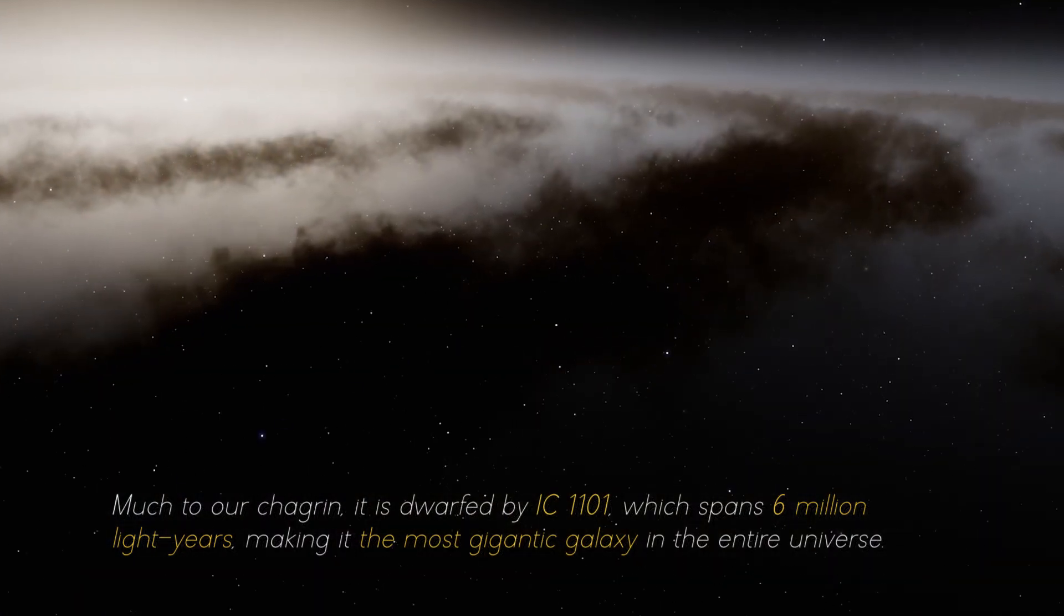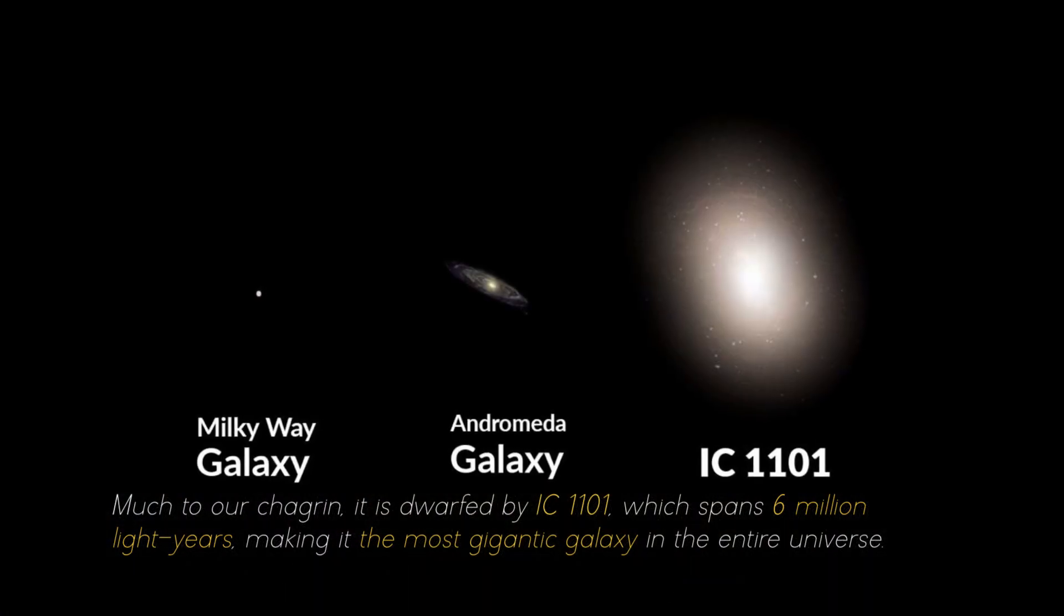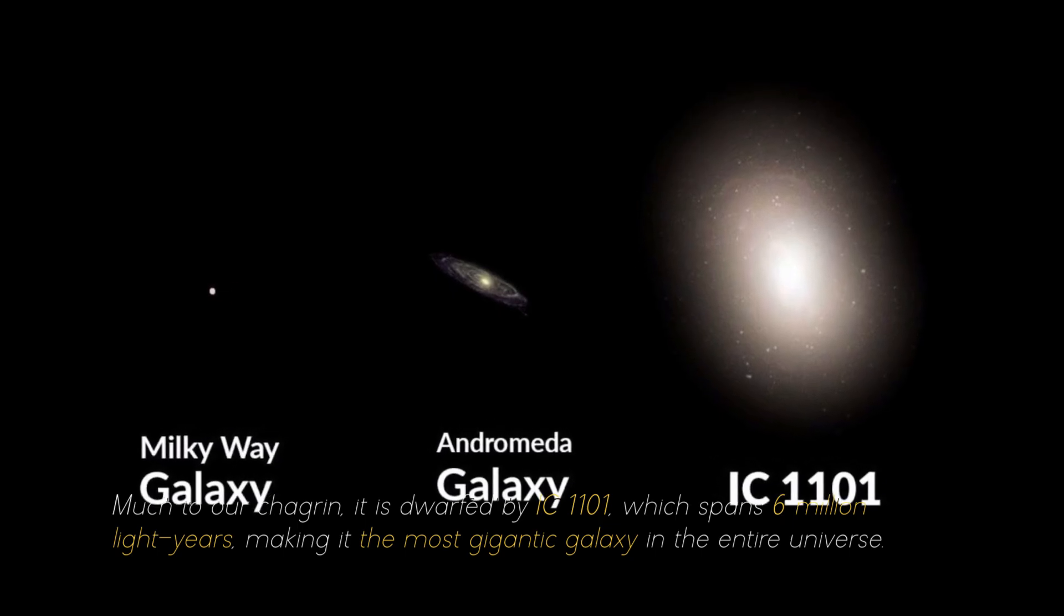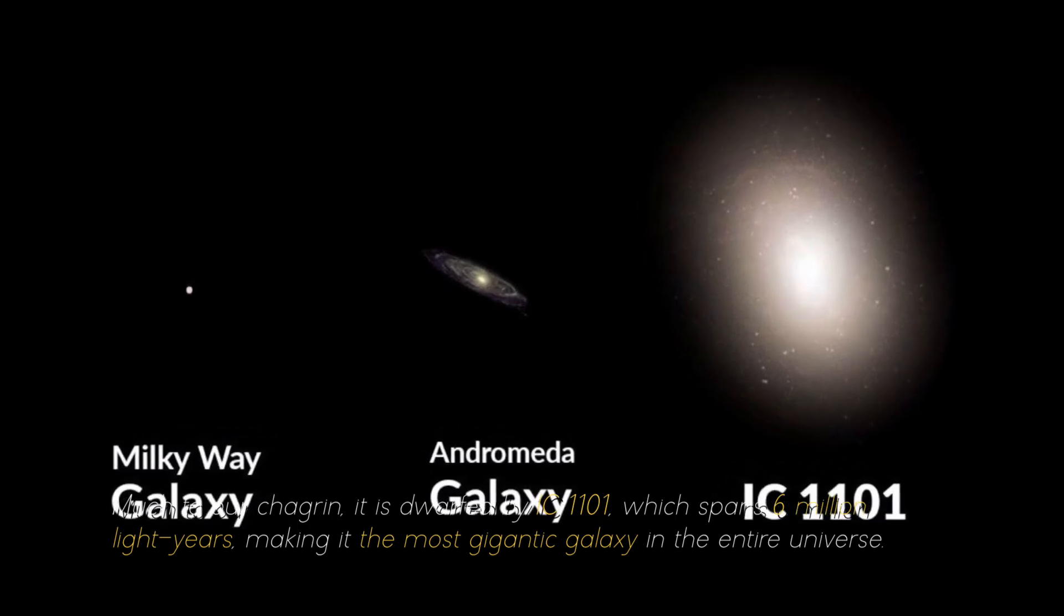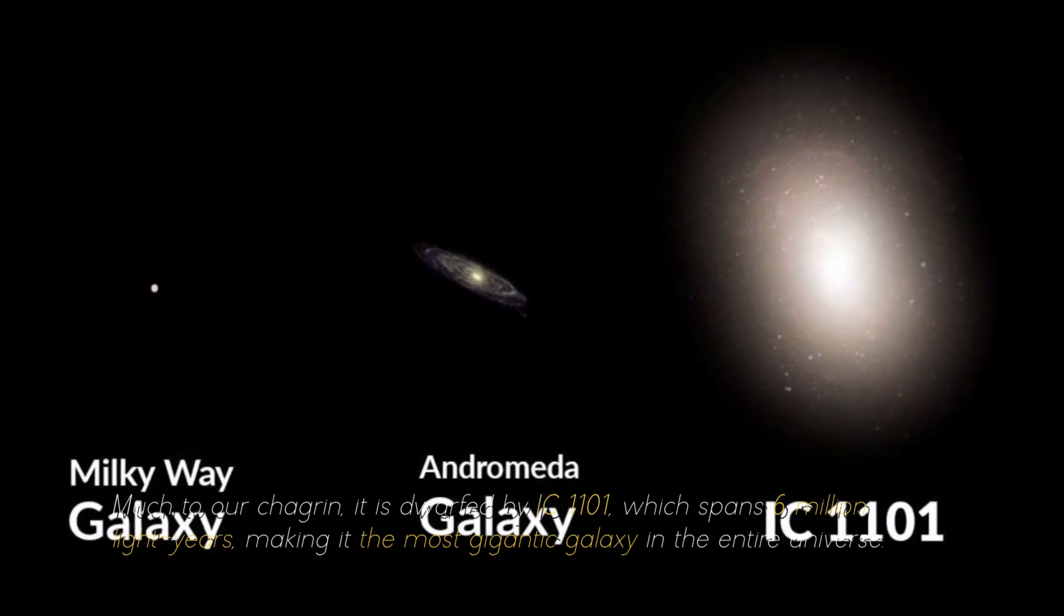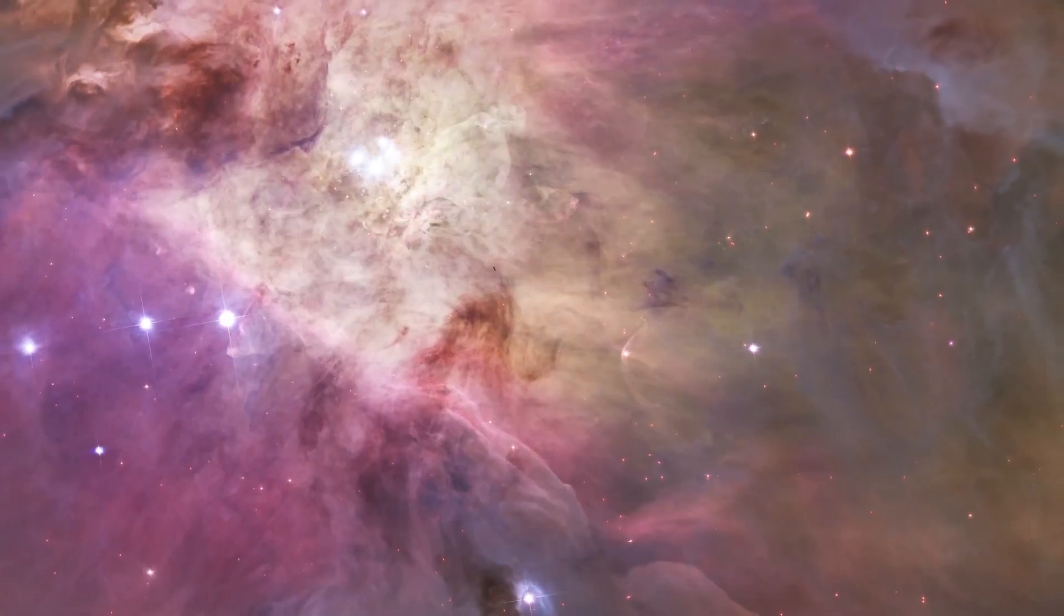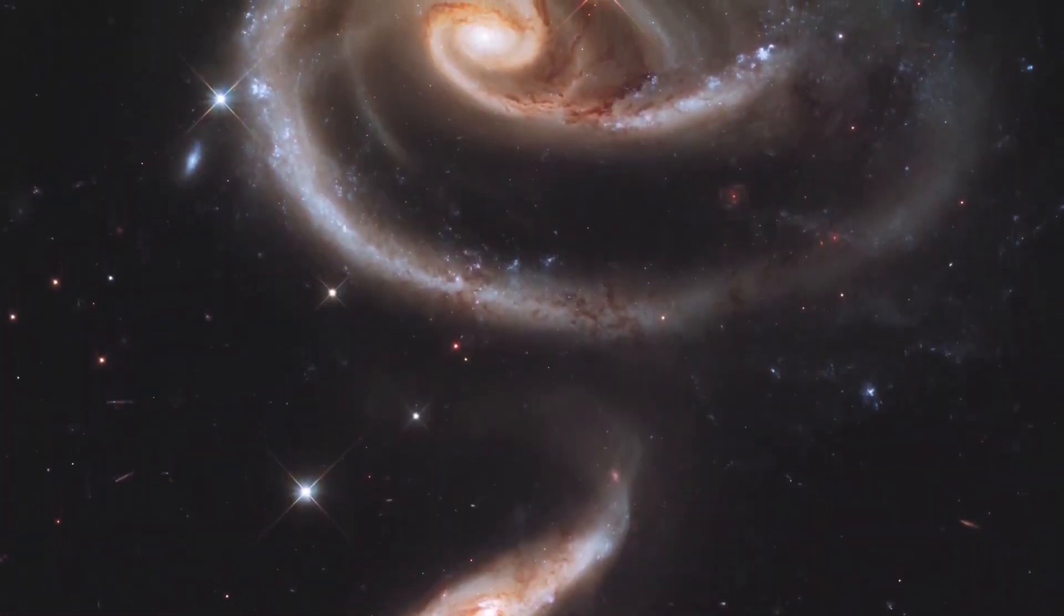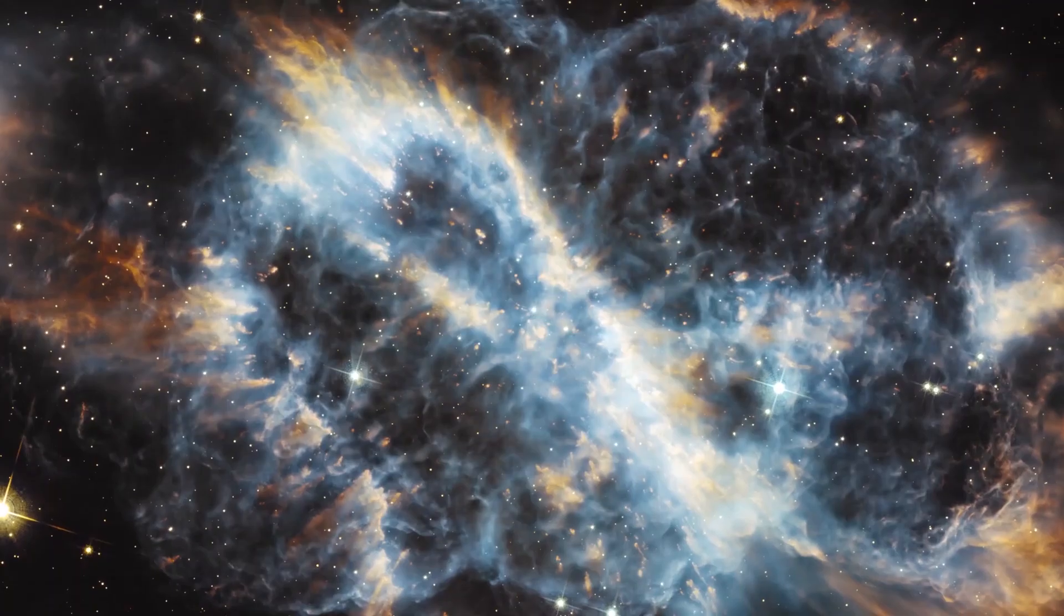Much to our chagrin, it is dwarfed by the IC 1101, which spans 6 million light years, making it the most gigantic galaxy in the entire universe. Plunging into the vastness of space, there are even more colossal objects that could dwarf the largest galaxy in the cosmos.